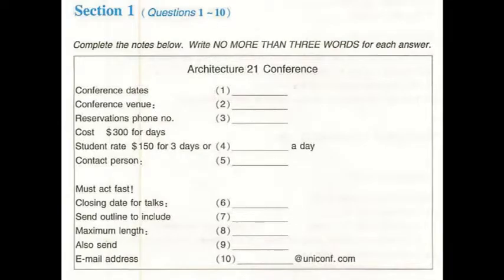Well, the best thing would be to send it to the conference administrative officer. The address is admin in lowercase, you know, in small letters. Right. So that's admin at unicomf.edu.au. Right. I'll do that straight away. Thank you very much. You've been very helpful. Okay. Well, we hope to see you in October, then.